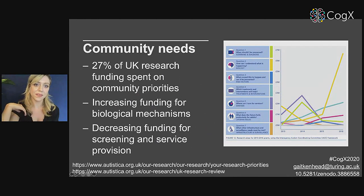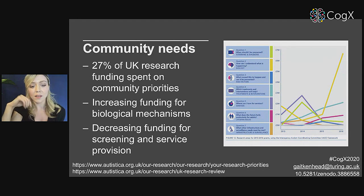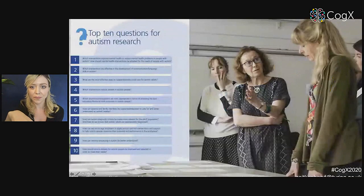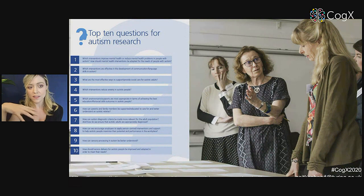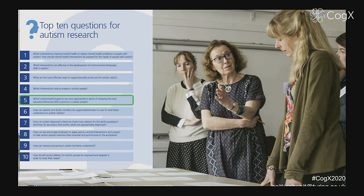First, some background to the project. This is a diagram showing funding for autism research, and you can see this huge yellow line going up — this is funding spent on biological mechanisms — but this is not a community priority. In fact, only 27% of UK research funding is spent on community priorities. There's an enormous disparity. Autistica ran a very extensive priority-setting exercise with the autistic community — over a thousand people took part — and they identified the top 10 questions for autism research, one of which is around which environments are best for autistic people.